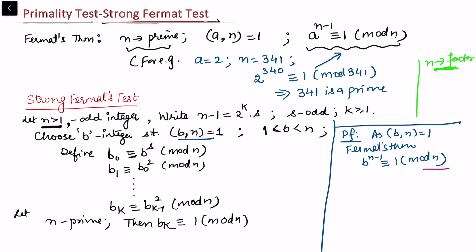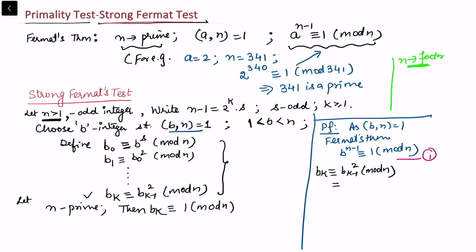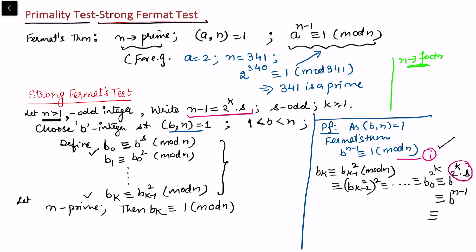From the recurrence, bₖ ≡ bₖ₋₁² ≡ bₖ₋₂⁴ ≡ ... ≡ b₀^(2^k) mod n. Since b₀ = b^s, we get bₖ ≡ b^(s·2^k) = b^(n-1) ≡ 1 mod n, using equation 1. This confirms that for a prime n, we always reach bₖ ≡ 1 mod n.